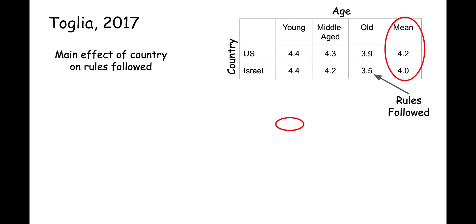Here is an example of a results table from an AJOT paper by Taglia, which compared performance between people in three different age groups in the U.S. and Israel on a calendar planning activity. The results table indicates there is a main effect of country on rules followed. I have pulled out the data for the number of rules followed by people in the U.S. and Israel in each age group. The main effect means that regardless of age, participants in the U.S. followed more rules than participants in Israel.